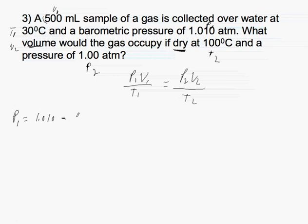...is going to be 0.0419. This is the vapor pressure of water at 30 degrees Celsius. When we subtract that number, we get 0.9681. So, this is our pressure.